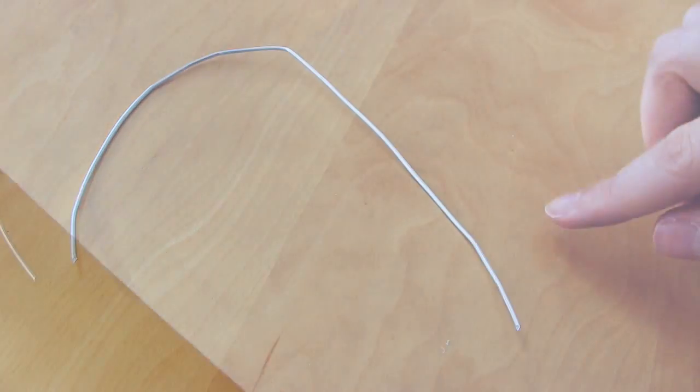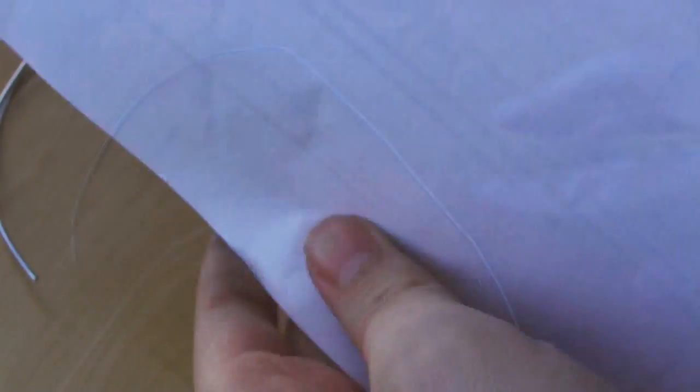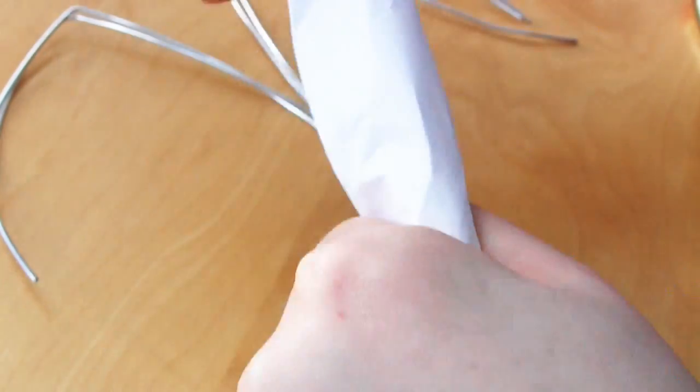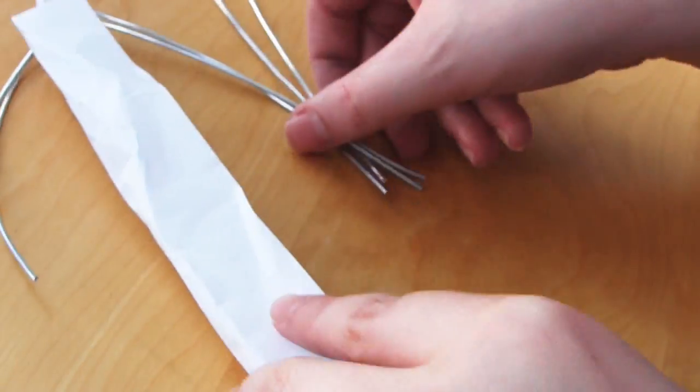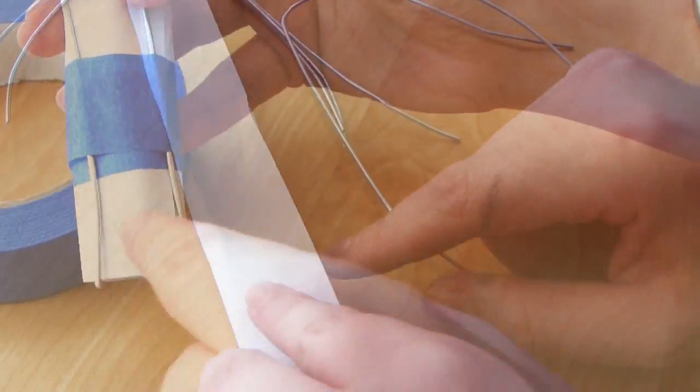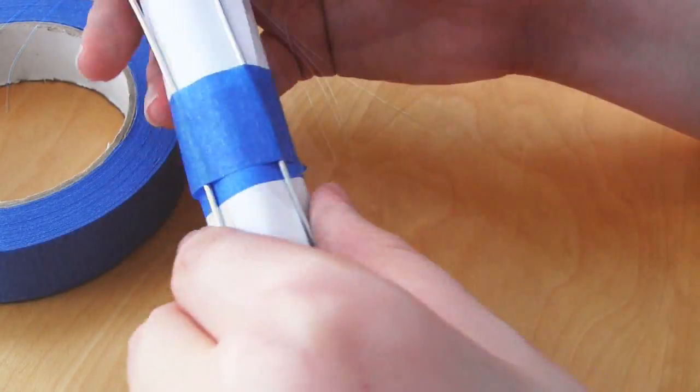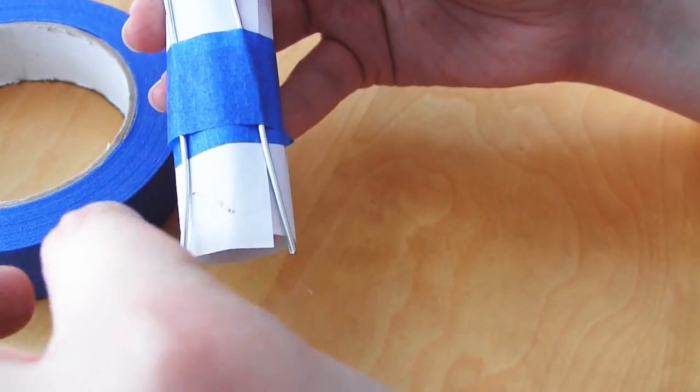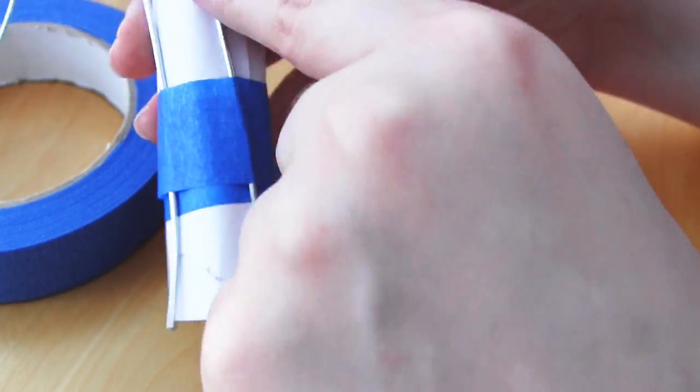The next step is to sculpt the tree trunk. And to do this you take some of your scrap paper. In this case I'm just using regular printer paper. And I roll it up into a cylinder that is slightly shorter than the height of tree trunk that I want.